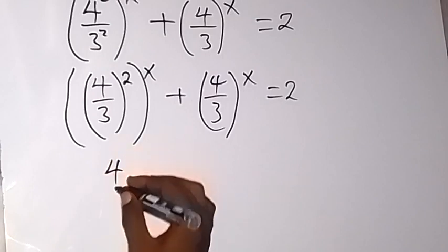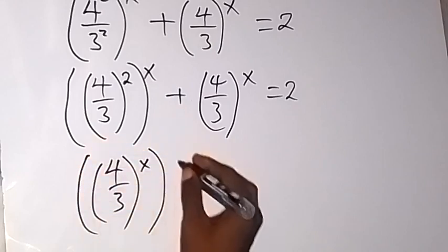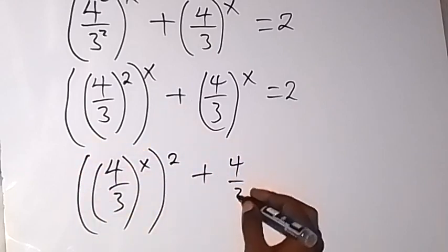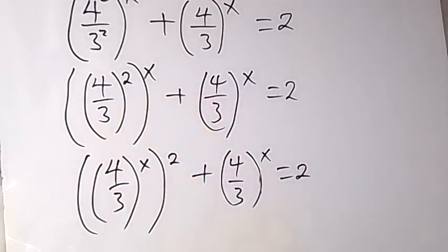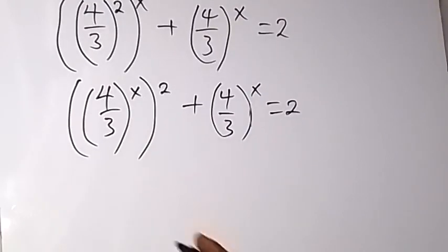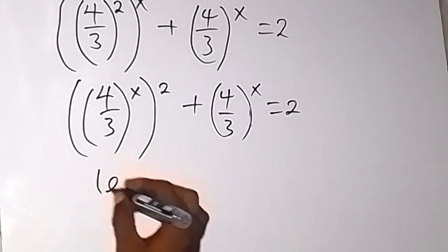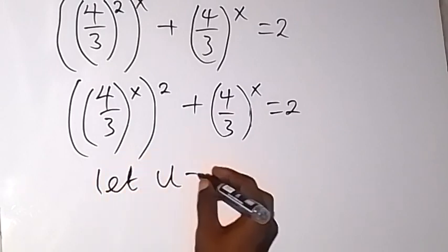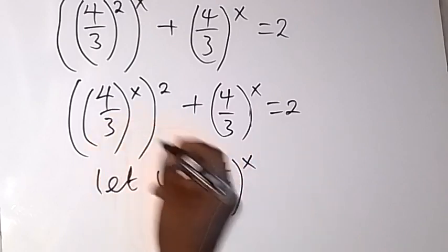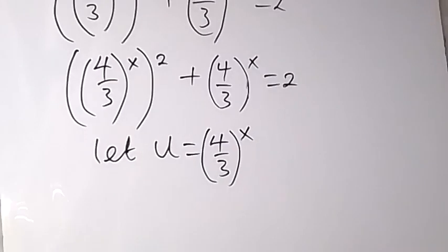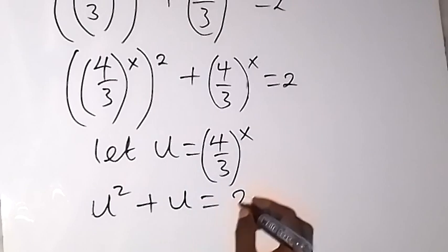That gives us 4 over 3 raised to power x, then raised to power 2, plus 4 over 3 raised to power x, equals 2. From there, we can use a letter to represent 4 over 3 raised to power x. So let u equal 4 over 3 raised to power x.